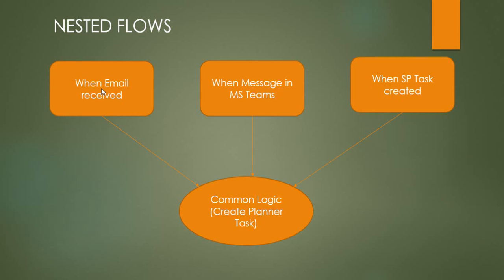Consider a scenario where I want to create MS Planner tasks in multiple cases. For example, if I receive an email from my manager saying a new task has been created, it should trigger and create an MS Planner task for me. Also when I receive a message within my Teams channel stating a task is assigned, or when a trigger happens on a SharePoint task list — so in short, we have three trigger conditions all wanting to do the same logic.